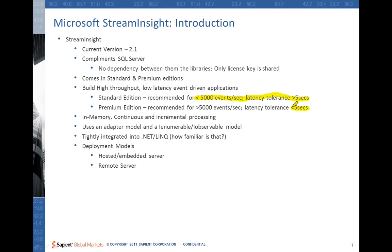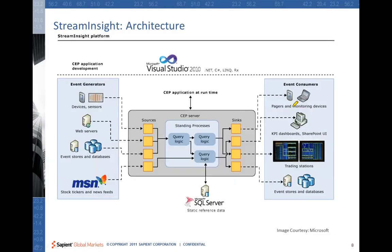If you have multiple applications that need to share the same event data sources and can benefit from access to multiple metadata objects, then you can go for a remote server. For example, if you want to register one event source and run several patterns for that event source, you can go for a remote model. The runtime components consist of a set of components to host the Stream Insight server, containing core engine DLLs for embedded or standalone service hosting, as well as adaptive framework DLLs. This architecture is fairly close to the CEP architecture we saw two slides before.